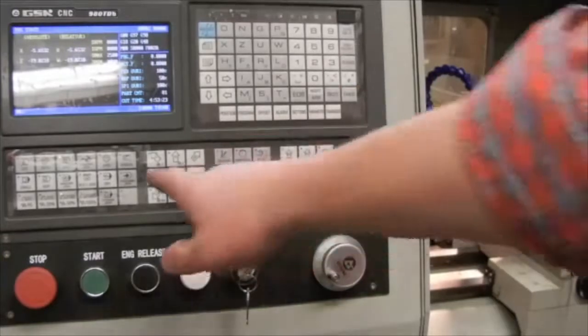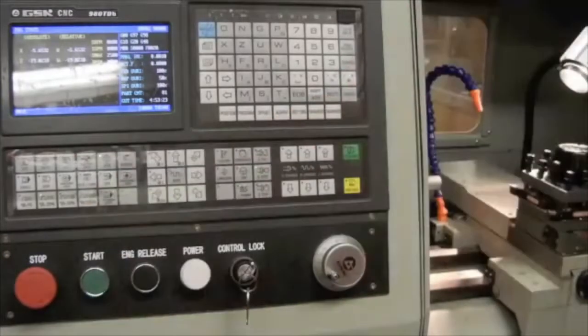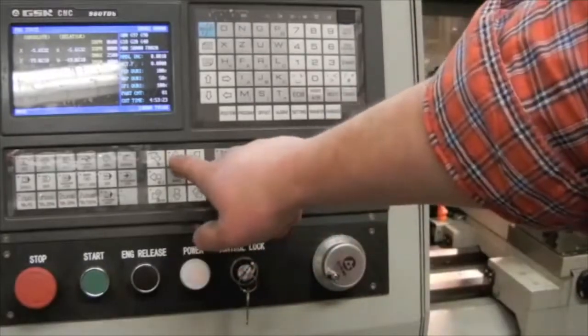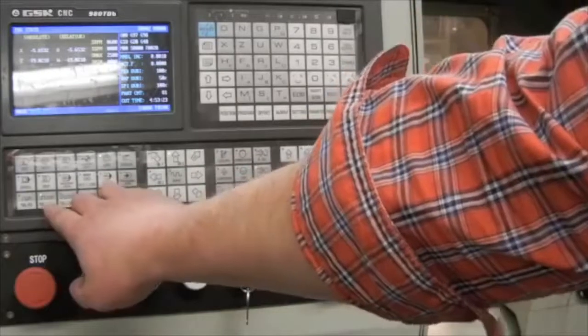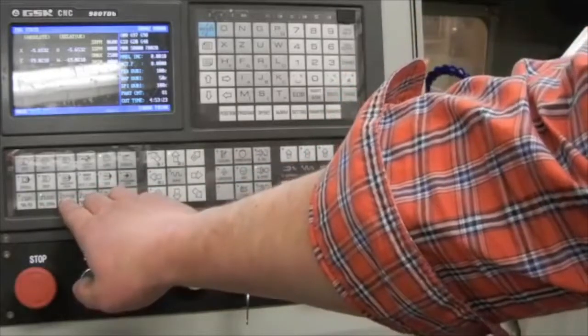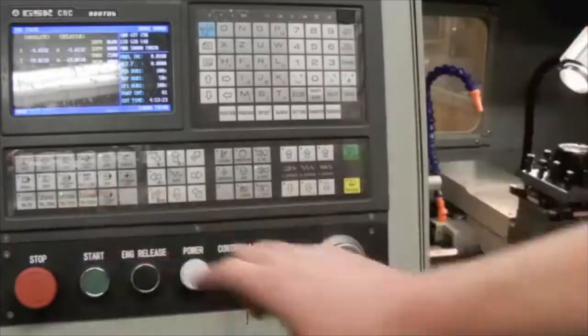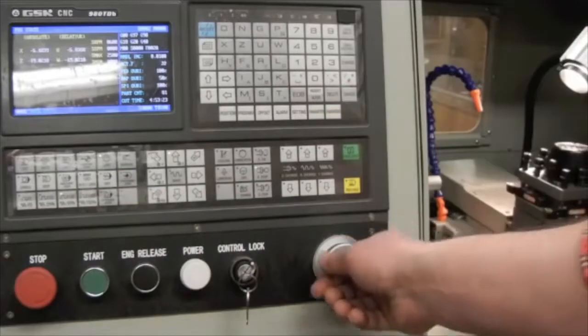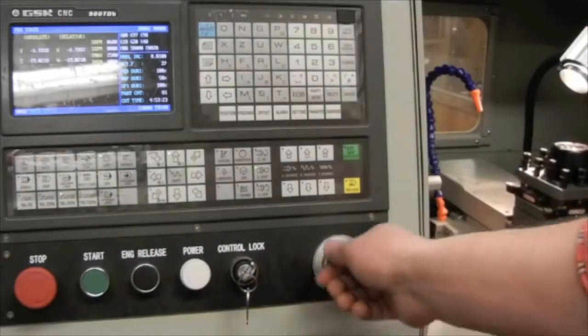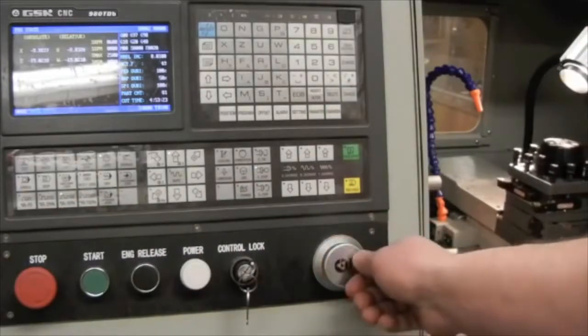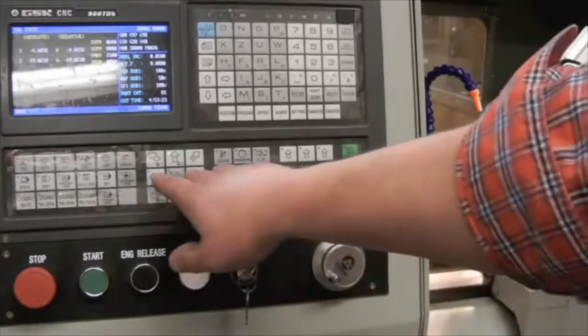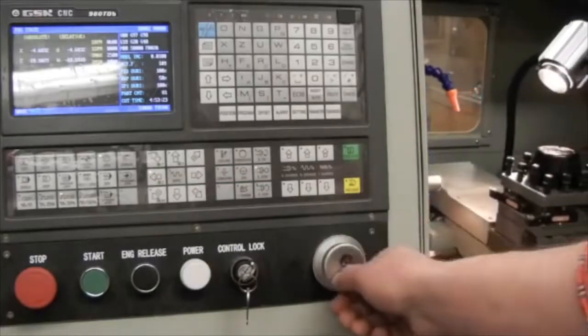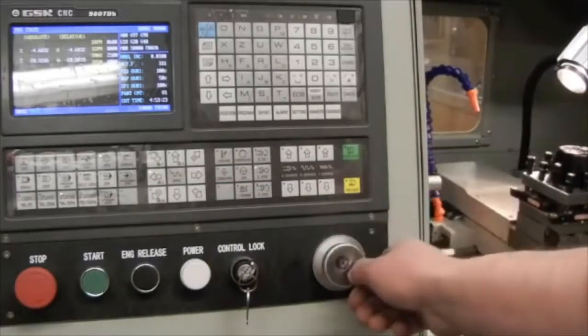If I press MPG on the controller and then I press a direction such as X and a value, I'm going to use the times 100 on the controller. As I move my hand wheel, you should see the tool carriage moving in the left hand side of your screen. If I press Z, I will move the carriage left and right.